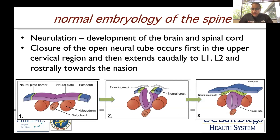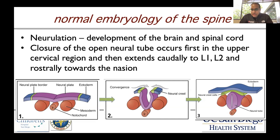You have a flat neural plate surrounded by ectoderm. As this process happens, that neural plate folds and the ectoderm comes into a position that is superficial or superior. The third slide shows a normal neural tube that is completely closed, surrounded by neural crest cells more superficially, and then the ectoderm on top of that.